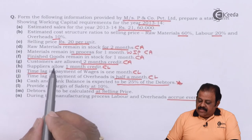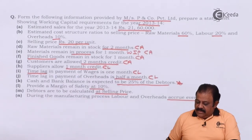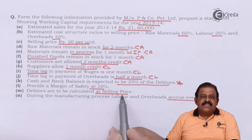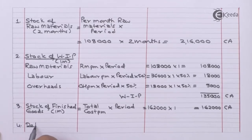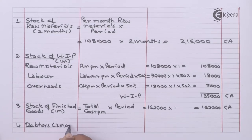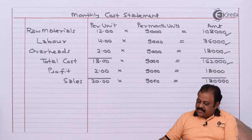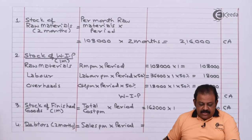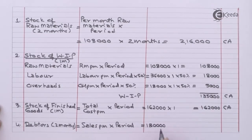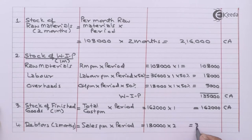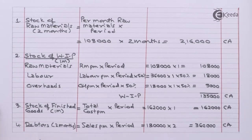Next we calculate debtors. Customers are allowed two months credit, and debtors are to be calculated at selling price. Per month sales = rupees 1,80,000 × credit period of 2 months = rupees 3,60,000. Debtors of rupees 3,60,000 is a current asset.